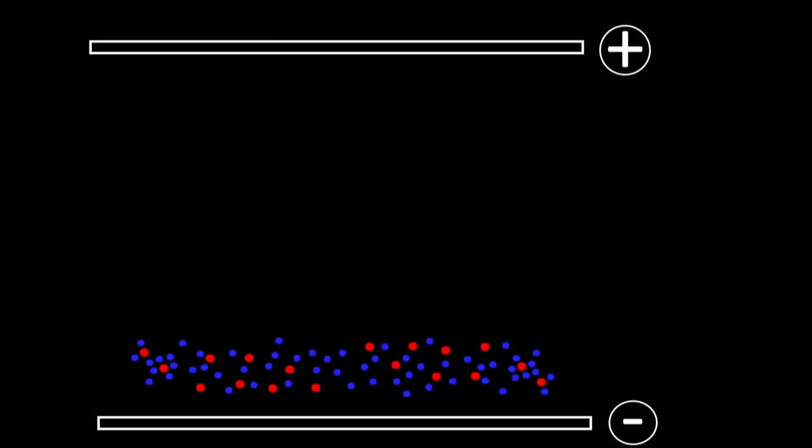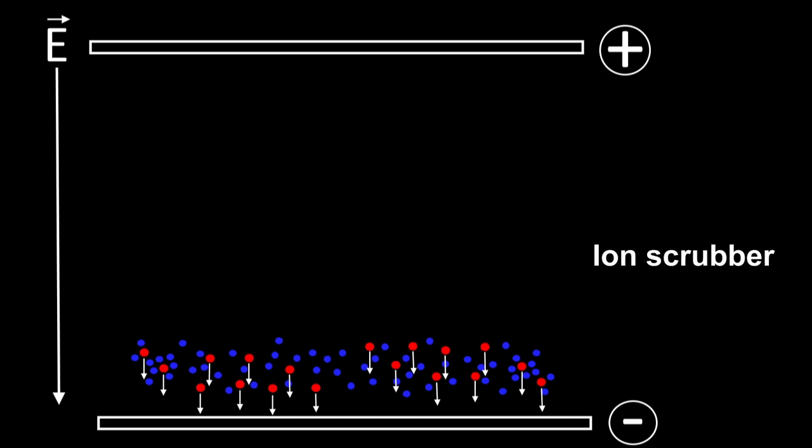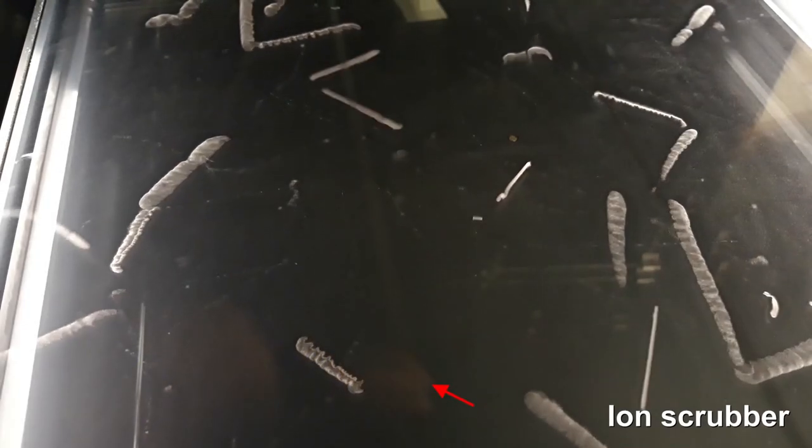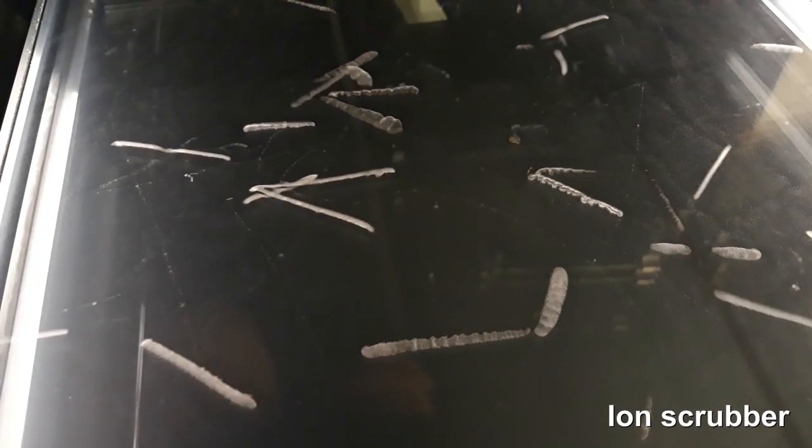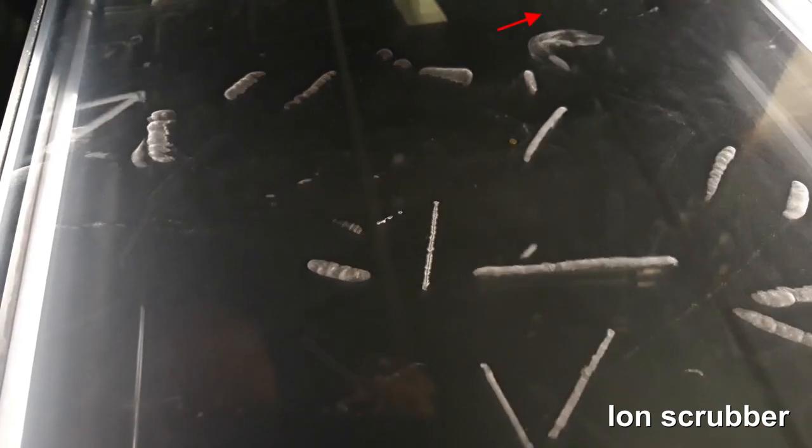To remove the traces faster a high voltage can be applied between the top and the bottom of the chamber. This causes an electric field to form that removes the ions faster from the chamber. It is also called an ion scrubber. In this chamber you can see thin metal strings at the top which were added to apply the high voltage.